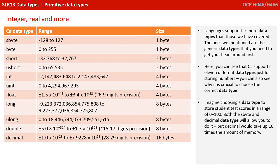Languages support far more data types than those we've covered. The ones we mentioned are the generic data types that you need to get your head around first. Here, for example, on the table on the left, you can see that C# supports 11 different data types just for storing numbers. You can also see why it's crucial to choose the correct data type. Imagine choosing a data type to store a student's test score, where that score will always be in the range 0 to 100.